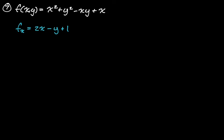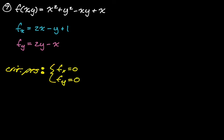For partial y: x² goes away, the derivative of y² is 2y, and the derivative of negative xy is negative x. So partial y is 2y minus x. To find critical points, we need both partial derivatives to equal zero.